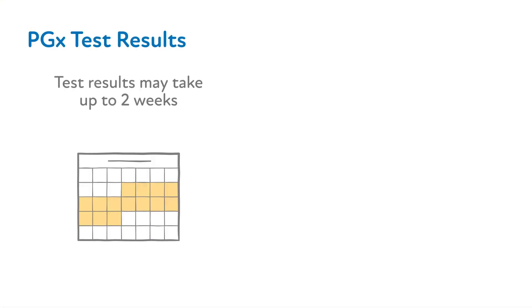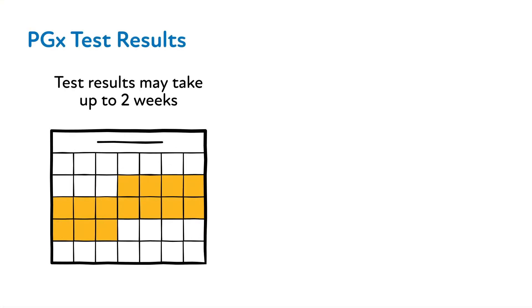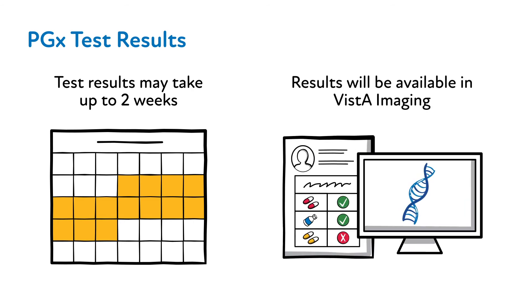Test results may take up to two weeks to be returned once the blood sample is received by Sanford Health's Imagenetics Lab. The Reference Laboratory test report will appear in Vista Imaging once the report is signed out by the testing laboratory and made available to VA, and you will be notified when results are ready.